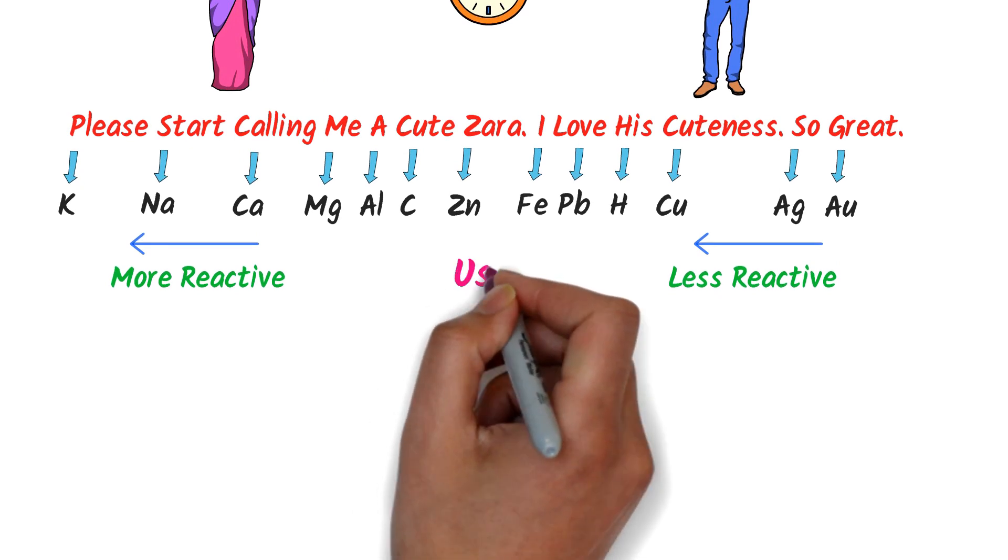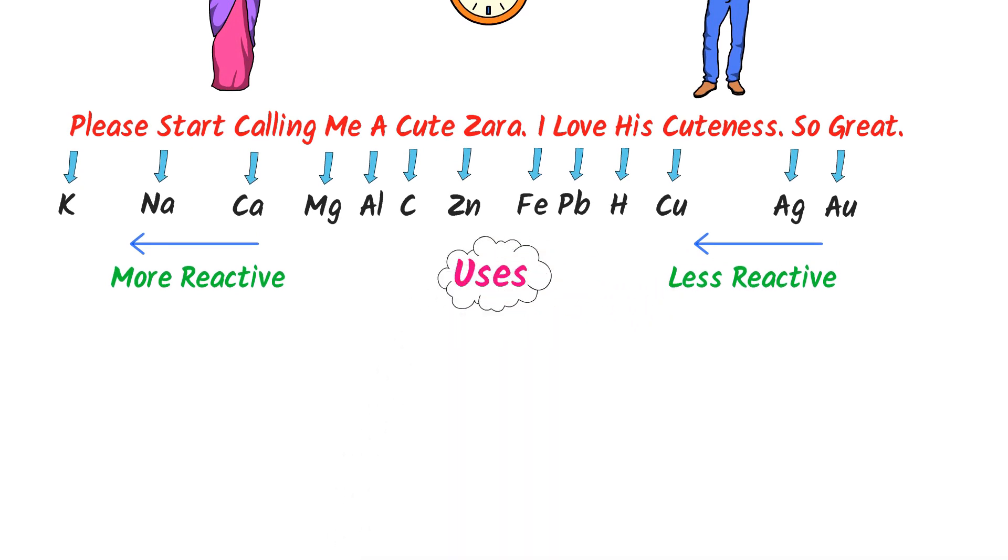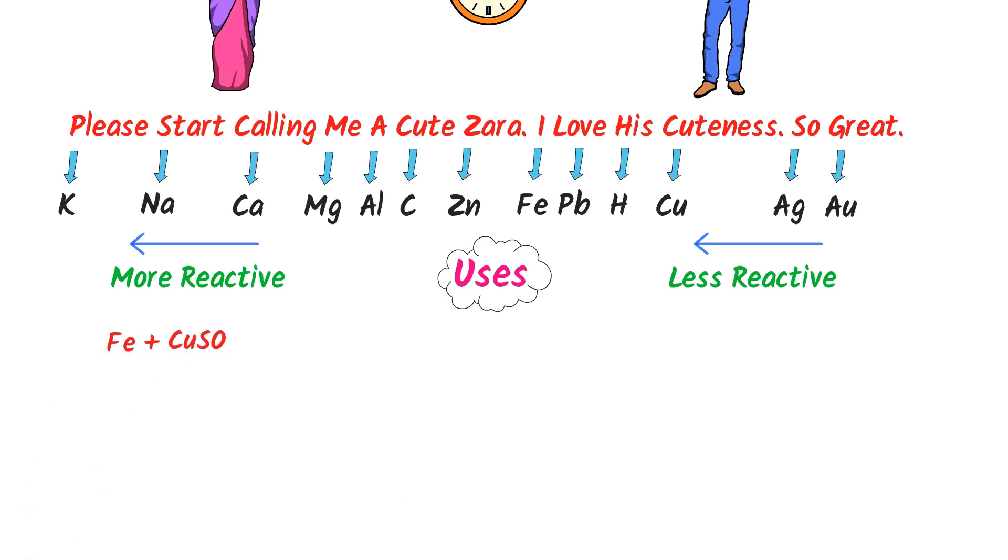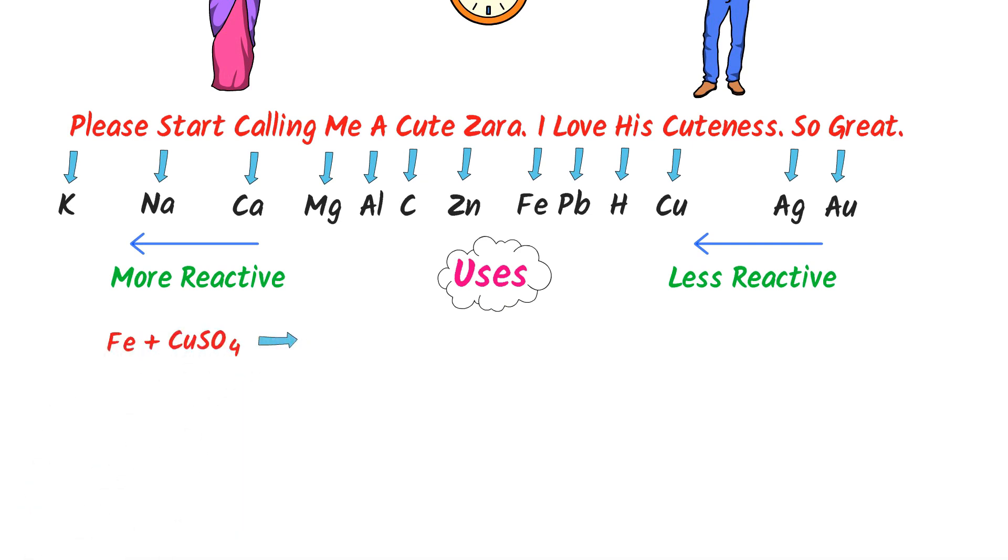Finally, let me teach you the uses of metal reactivity series in chemistry. For example, iron plus copper sulfate react together to form iron sulfate plus copper.